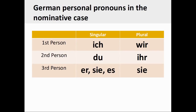German personal pronouns can be classified in the same manner. The singular personal pronouns in German are: ich, first person singular; du, second person singular; and er, sie, es, third person singular. The plural personal pronouns in German are: wir, first person plural; ihr, second person plural; and sie, third person plural.